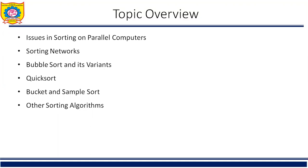such that ai' ≤ aj' for 1 ≤ i ≤ j ≤ n, and S' is a permutation of S.